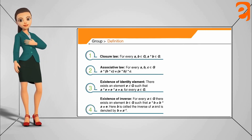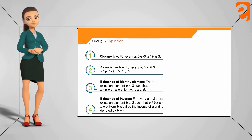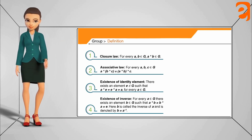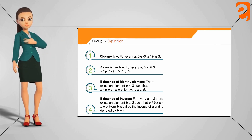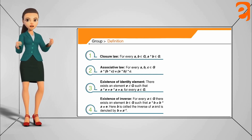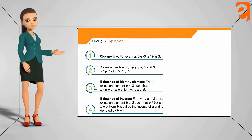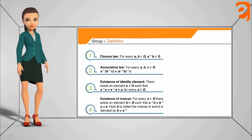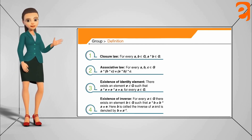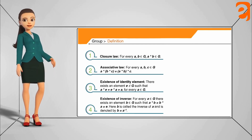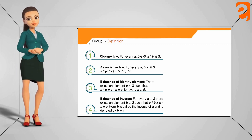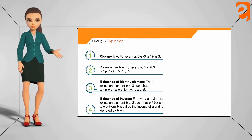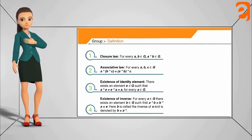The fourth property is the existence of an inverse: for any element a belonging to G, there should always exist another element b such that a star b equals the identity element. For example, if a equals 2, then b should equal 1/2, and 1/2 must be present in the set G, so that their product gives the identity. These four properties show that G with the binary operation is a group.